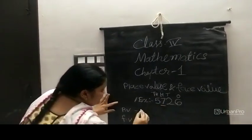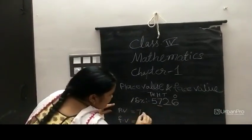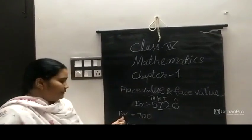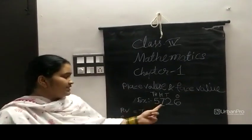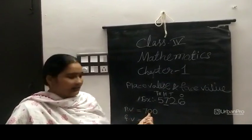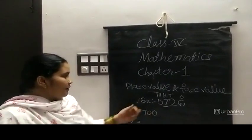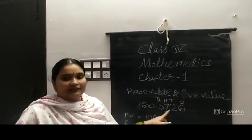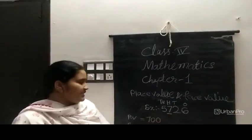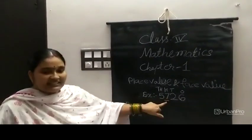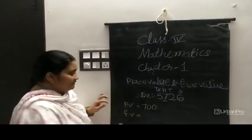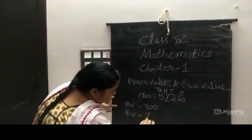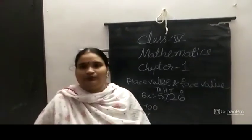The place value of the 7 is 700. The face value of the 7: the face value of 7 is as we see it, which is 7. Thank you.